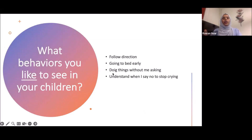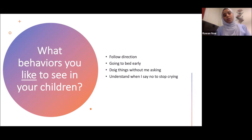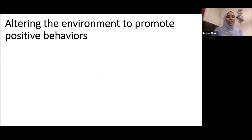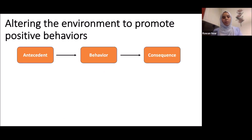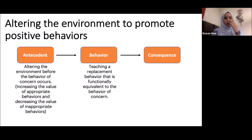We have a list of good behaviors we want to see. How do we get there? By altering the environment to promote positive behavior. We've explained how the environment plays a major role — what happens before a behavior will result in that behavior happening, and what happens after will determine whether it increases in the future. We need to change the environment to change inappropriate behaviors.